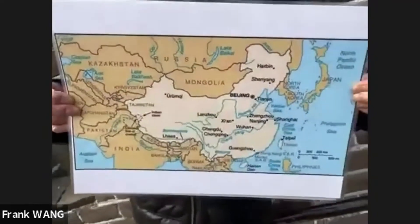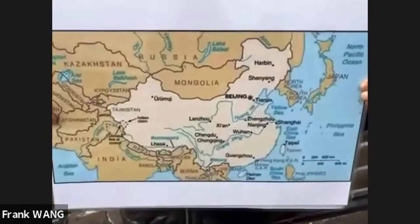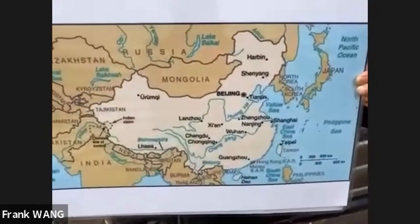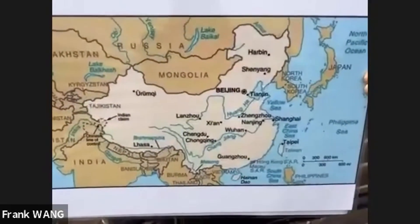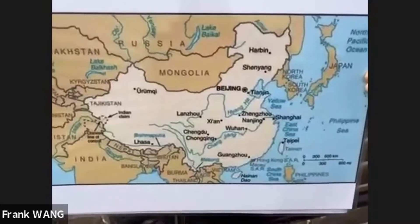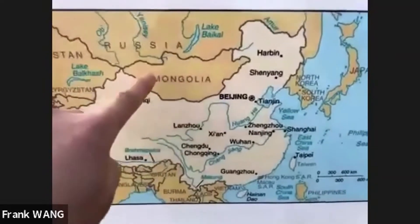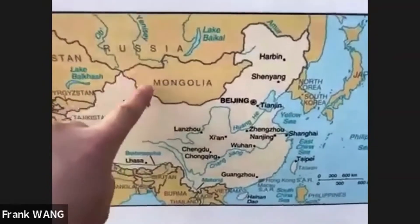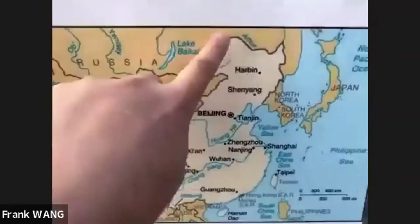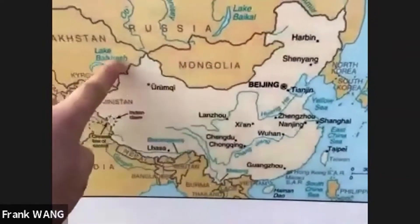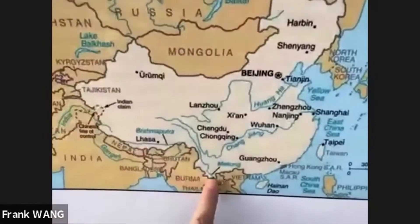PRC since 1949, when China was founded as the People's Republic of China. Mongolia already cut out since 1949, so it used to be the shape of an apple, but now it looks like a rooster.